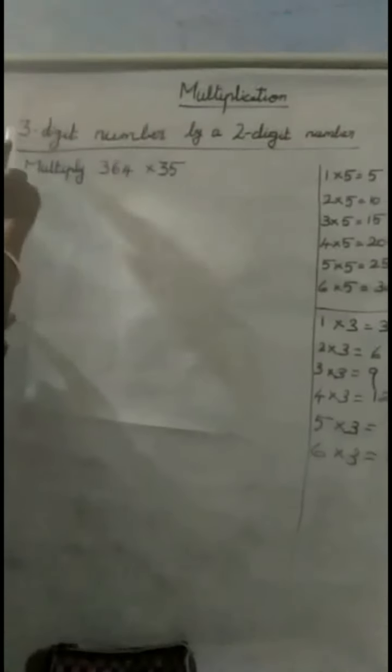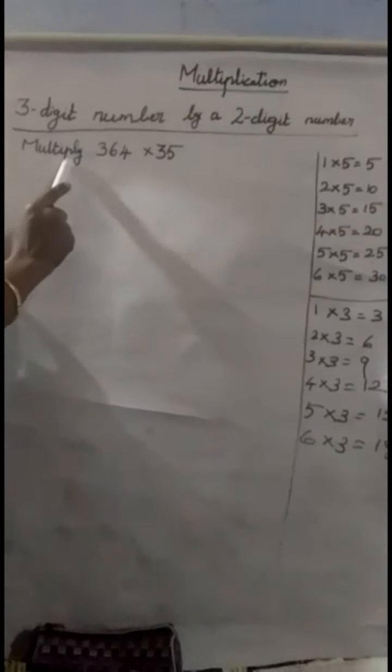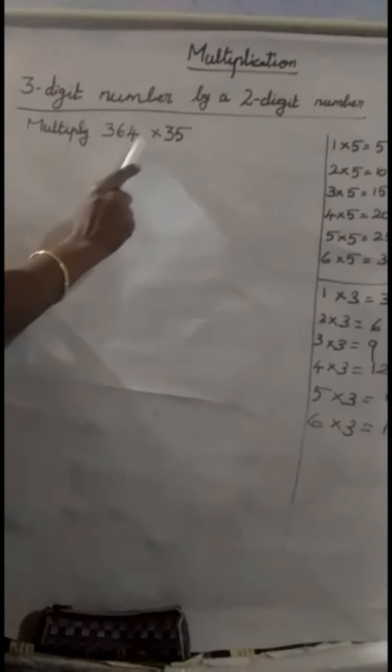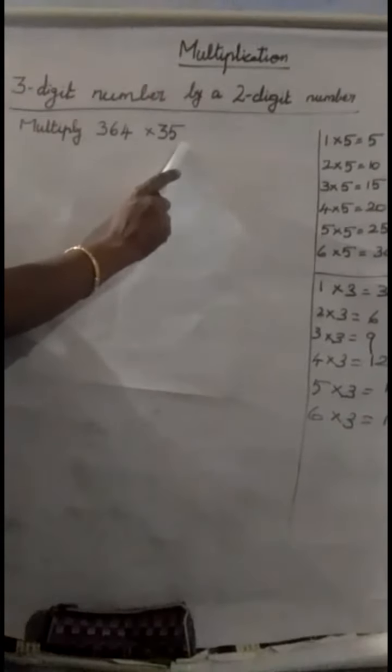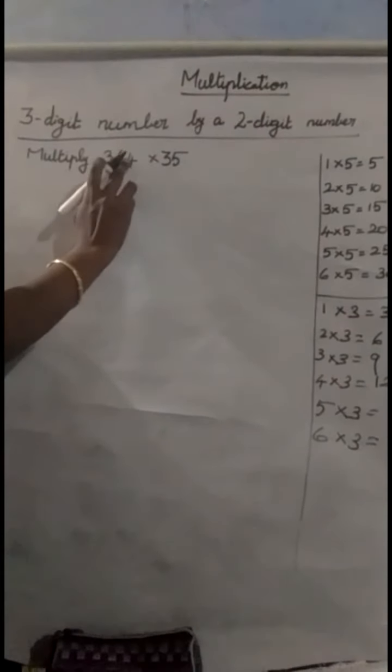Now, we are going to see multiplication of 3-digit number by 2-digit number. Multiply 364 by 35. Okay, children? See, which is the highest place value here? 100. See here, 1 stands 100.